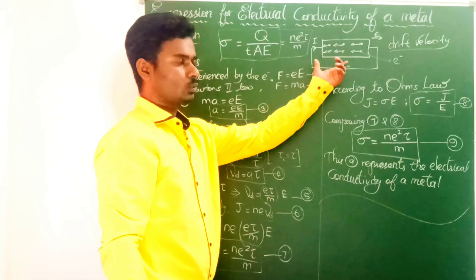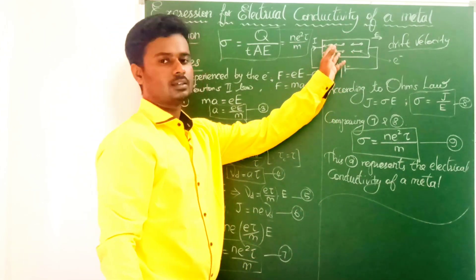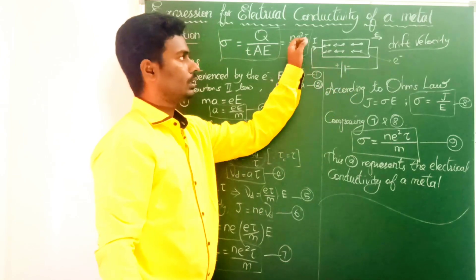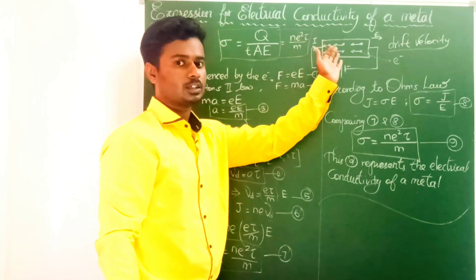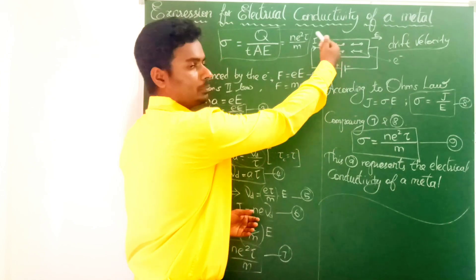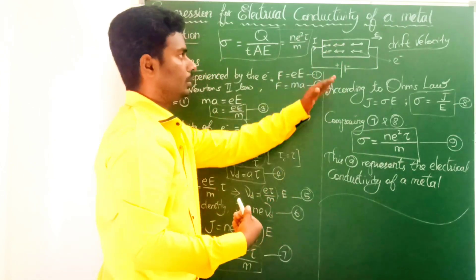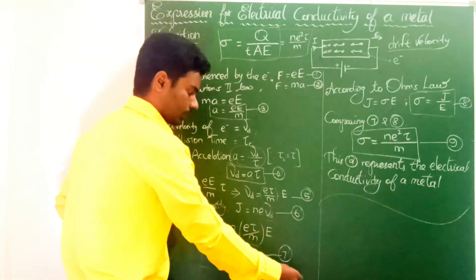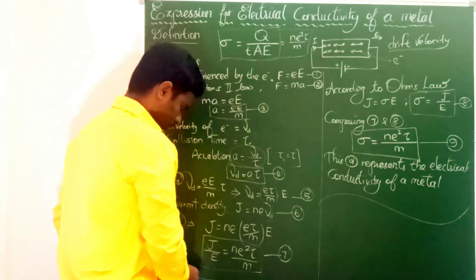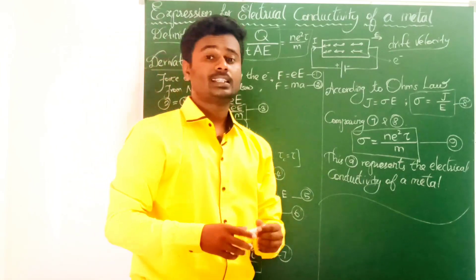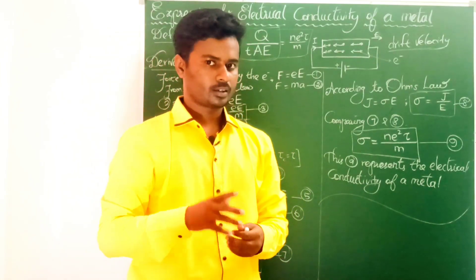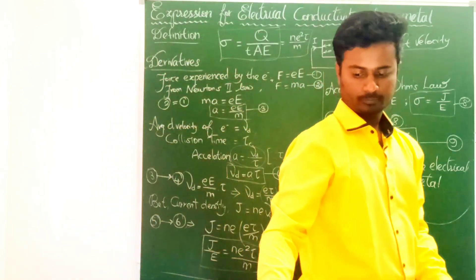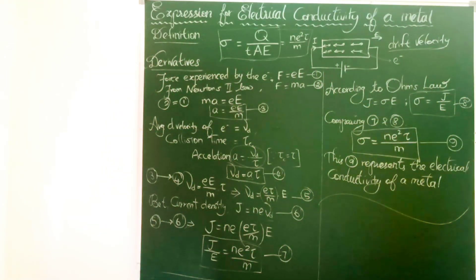So the diagram of the metal rod with current flowing makes it easy to understand. In the next class we will see the thermal conductivity of a metal. Thank you!